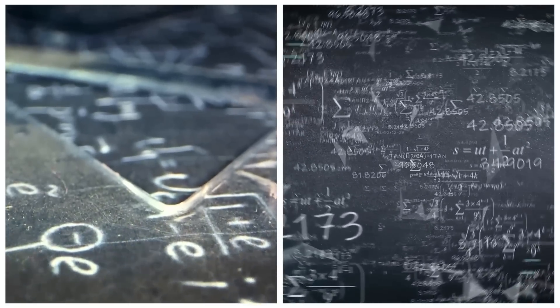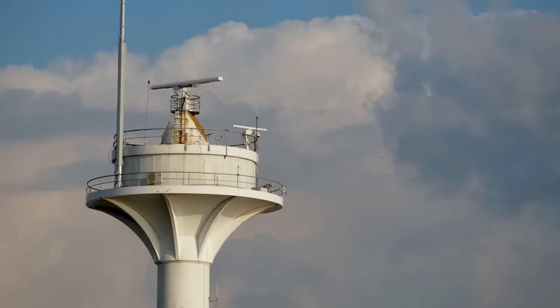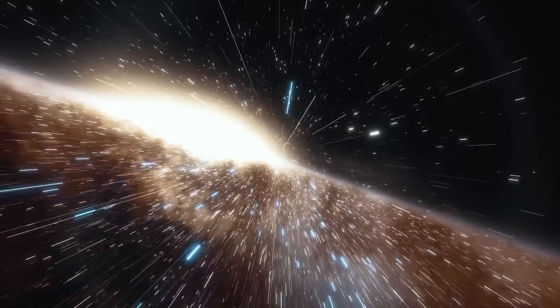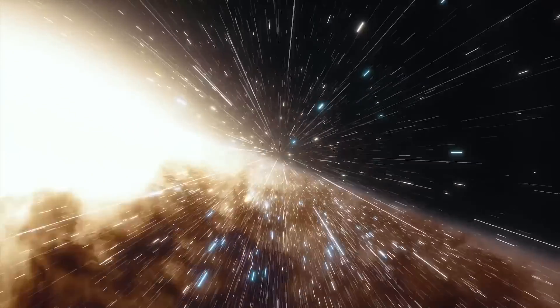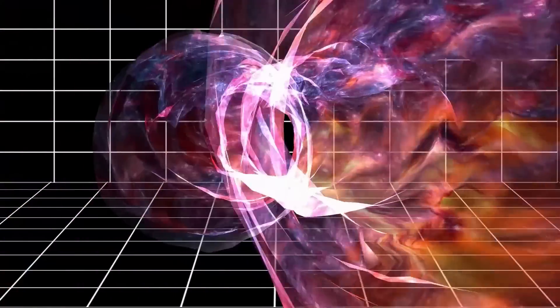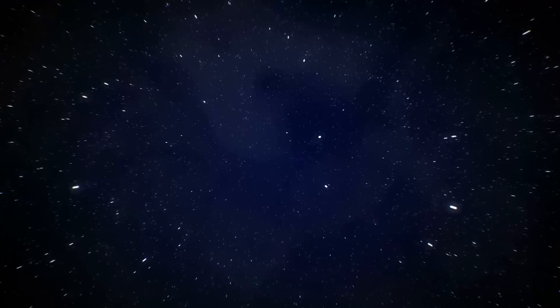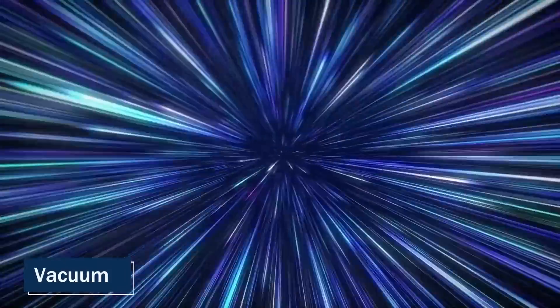According to the laws of physics, only electromagnetic waves such as light, radio waves, and gamma rays can travel at the speed of light in a vacuum. These waves are known as massless particles, which means they have no rest mass and can reach the speed of light. These waves can travel through a vacuum such as space without any resistance or interference.